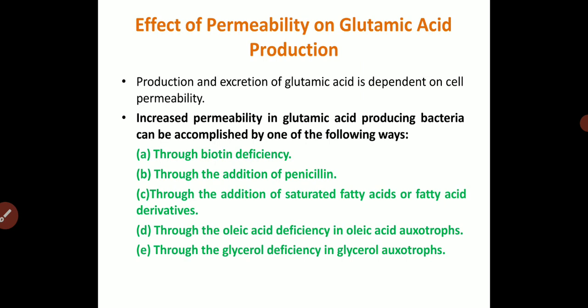For high glutamic acid production, certain important factors control the process. Through biotin deficiency, we can overproduce glutamic acid by a specific microorganism. Through the addition of penicillin as an antibiotic, which enhances the activity of certain bacteria like E. coli or Corynebacterium species. Through the addition of saturated fatty acids or fatty acid derivatives, or through oleic acid deficiency in oleic acid auxotrophs, or through glycerol deficiency in glycerol auxotrophs.